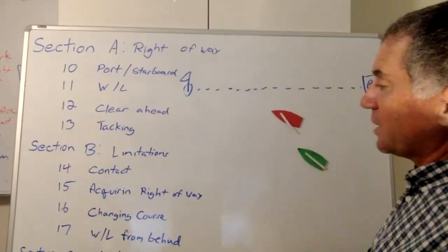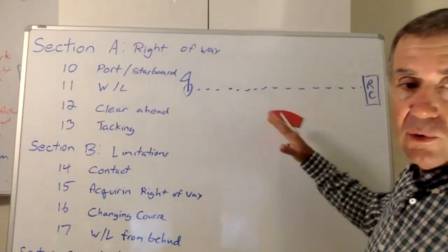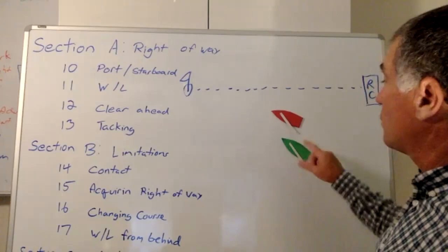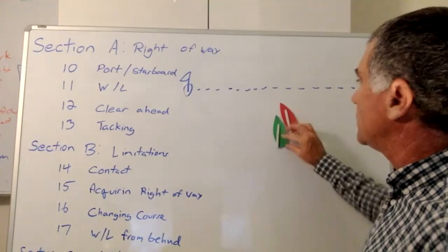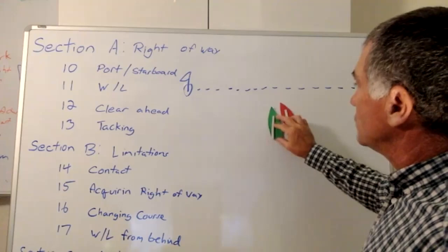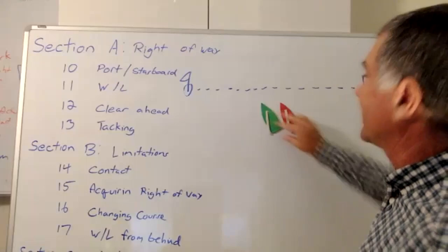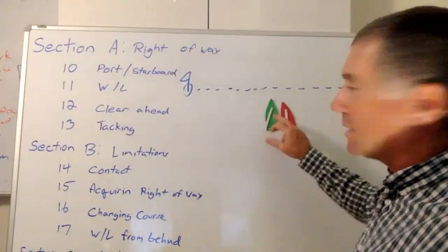There is one other thought here, is rule 17 is when you gain the leeward overlap from behind. If you're on a free leg of the course, if you gain it from behind, you can't go above your proper course. So before the start there is no proper course. So I can come in from behind you, as long as I give you a little time to get out of the way, I can just get you right head to wind if I want. And then once the gun goes, because I've gained it from behind, now we're racing, there is a proper course, I can't continue to head you up. But that's probably not going to happen anyway. You want to get racing, right?